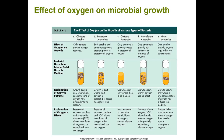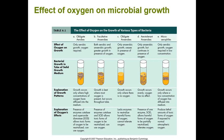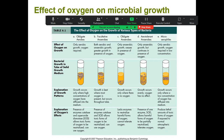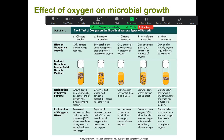Aerotolerant anaerobes do not use oxygen, but they have all the enzymes needed to detoxify toxic oxygen molecules. So they can grow in the presence of oxygen, but they don't require it — they use fermentation or anaerobic respiration. Their growth is uniform all the way down the tube: the same amount of growth at the top, in the middle, and at the bottom.